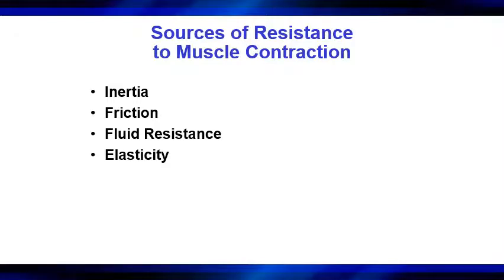Elasticity: the more an elastic component is stretched, the greater the resistance. When using resistance bands, the more the band gets stretched, the more resistance there is. Bands work with the strength curve — while exercises typically get easier toward the end of the range, band resistance actually gets harder due to the elastic properties. So elasticity from elastic resistance changes the dynamics of muscle contraction.